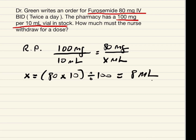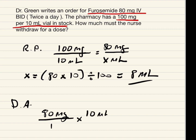Now let's do this as a dimensional analysis problem. We want to find out how many milliliters to withdraw for 80 milligrams. So we do 80 milligrams over 1, times 10 ml over 100 milligrams. We want the milligrams to cancel with each other — that's why we put 10 ml over 100 milligrams — so the milligrams cross out, leaving just milliliters.